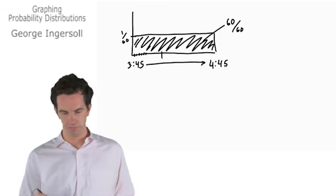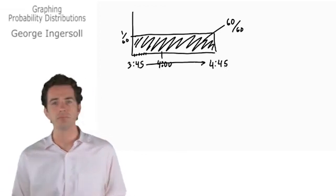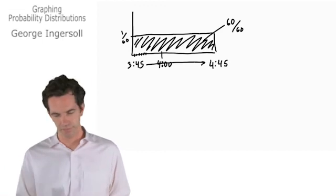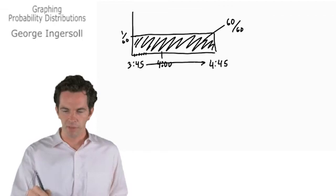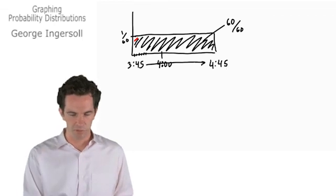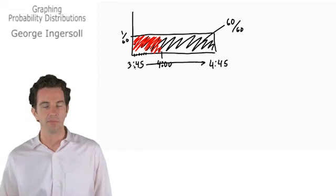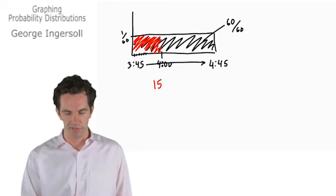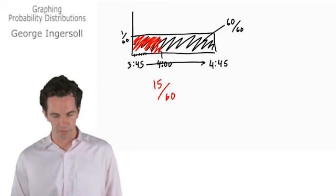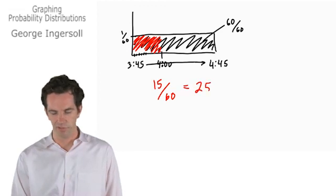Let's say this is 4 p.m. here. What's our probability of Jim arriving before 4 p.m.? Well, you can add up all these probabilities. There's 15 possible outcomes, each one of them has a probability of 1 over 60. The probability of Jim arriving sometime before 4 p.m. and ruining the surprise is 15 out of 60, also known as 25 percent.